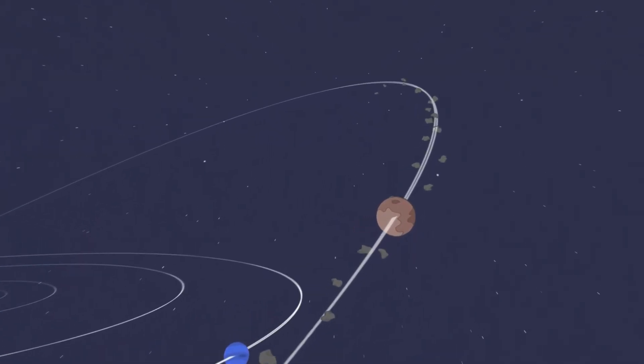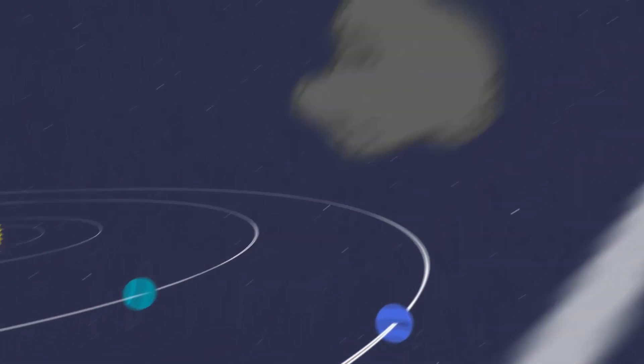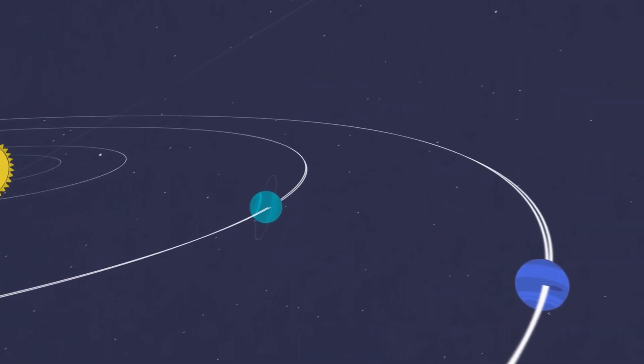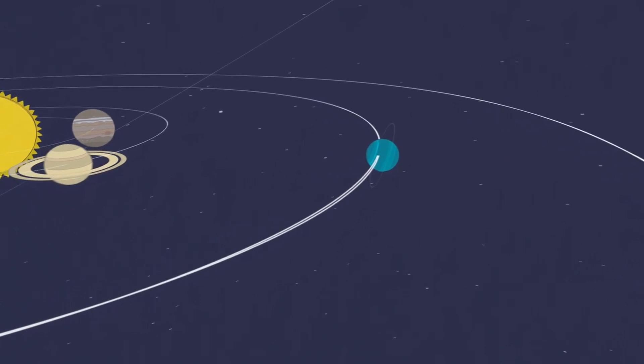Because of dwarf planet Pluto's elliptical orbit, Pluto is sometimes closer to the Sun and us than Neptune is.